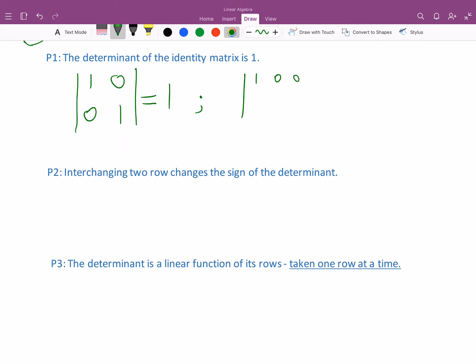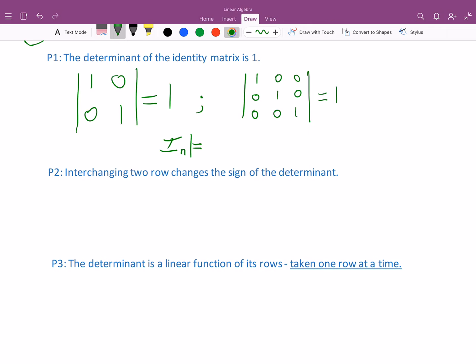Or in the 3 by 3 case, the determinant of 1, 0, 0, 0, 1, 0, 0, 0, 1, this determinant is 1. And we can denote the n by n identity as I_n, and we're going to say that the determinant of this matrix is 1.